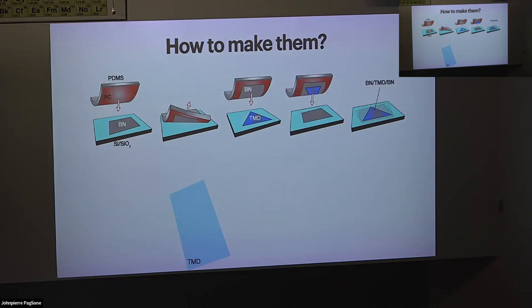A question was asked about how the rotation is actually performed. It is done using a modified probe station — a micro-manipulator with the head changed to hold a PDMS polymer. This allows manipulation in X, Y, Z to pick up and rotate layers with controlled precision.